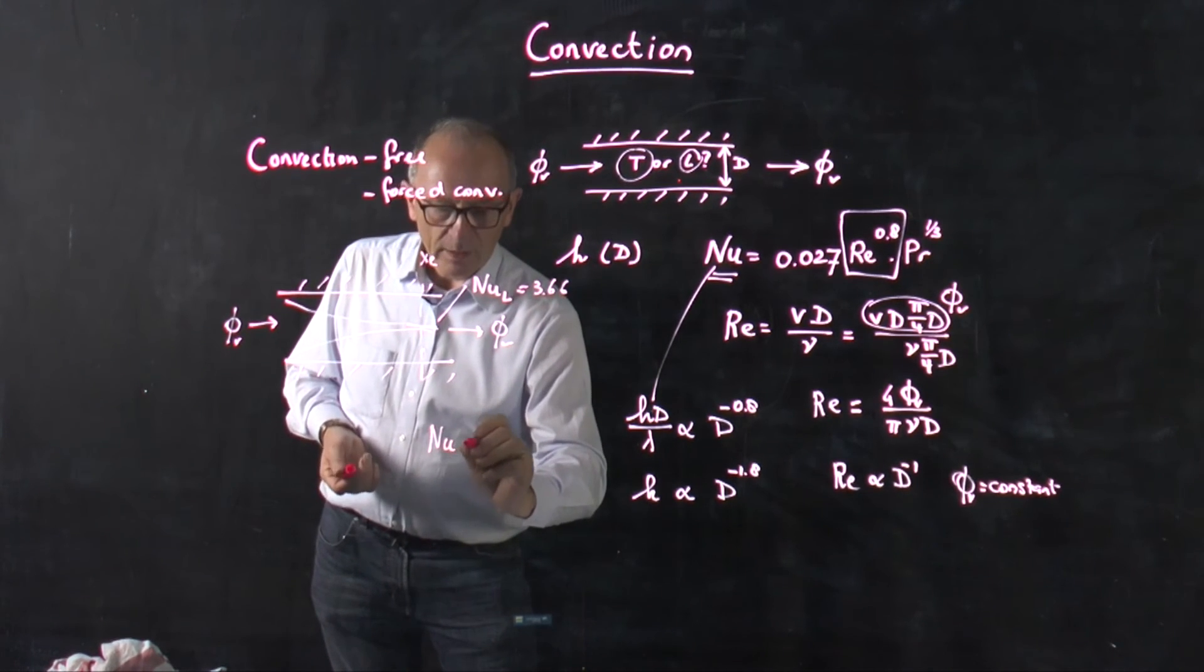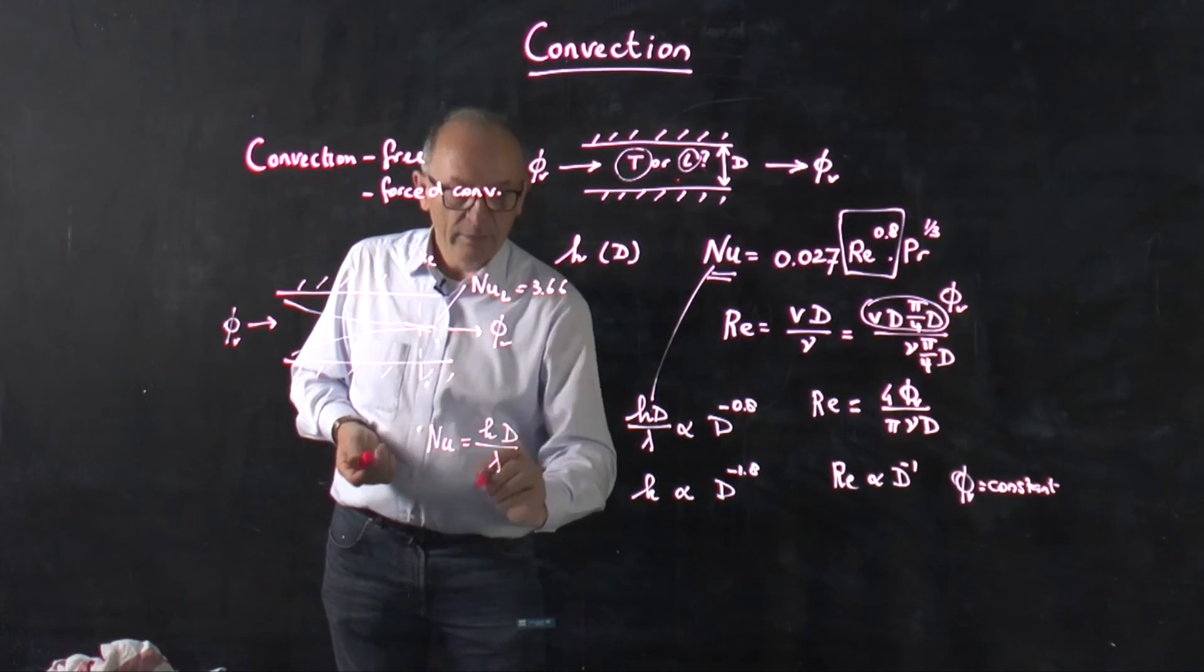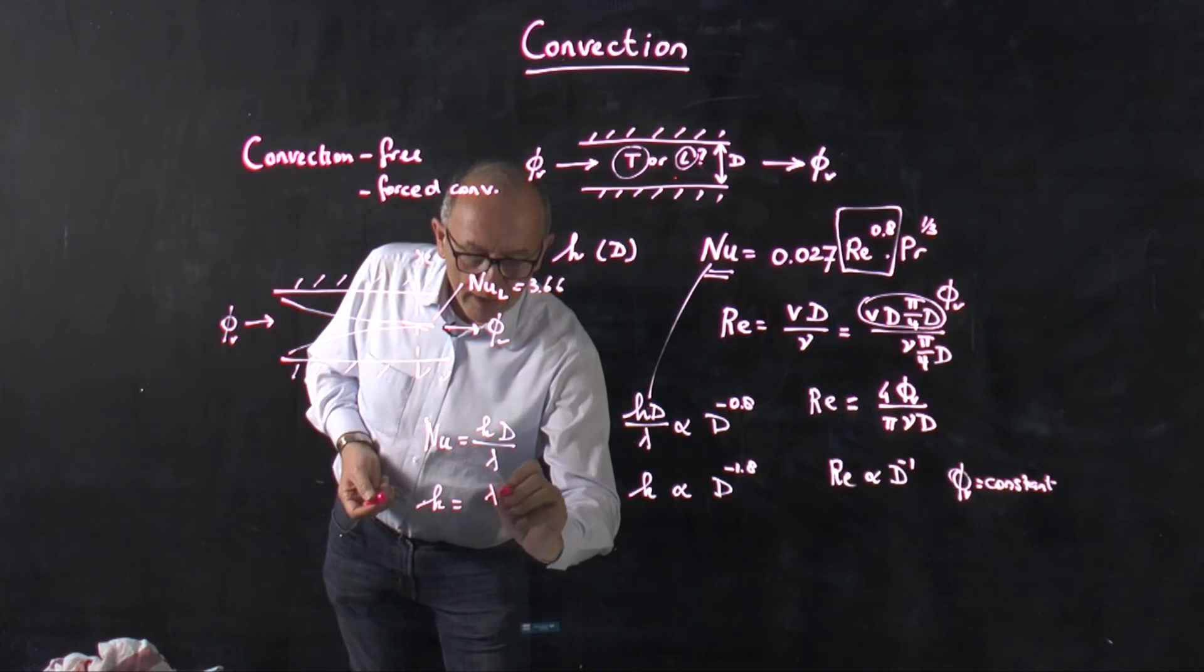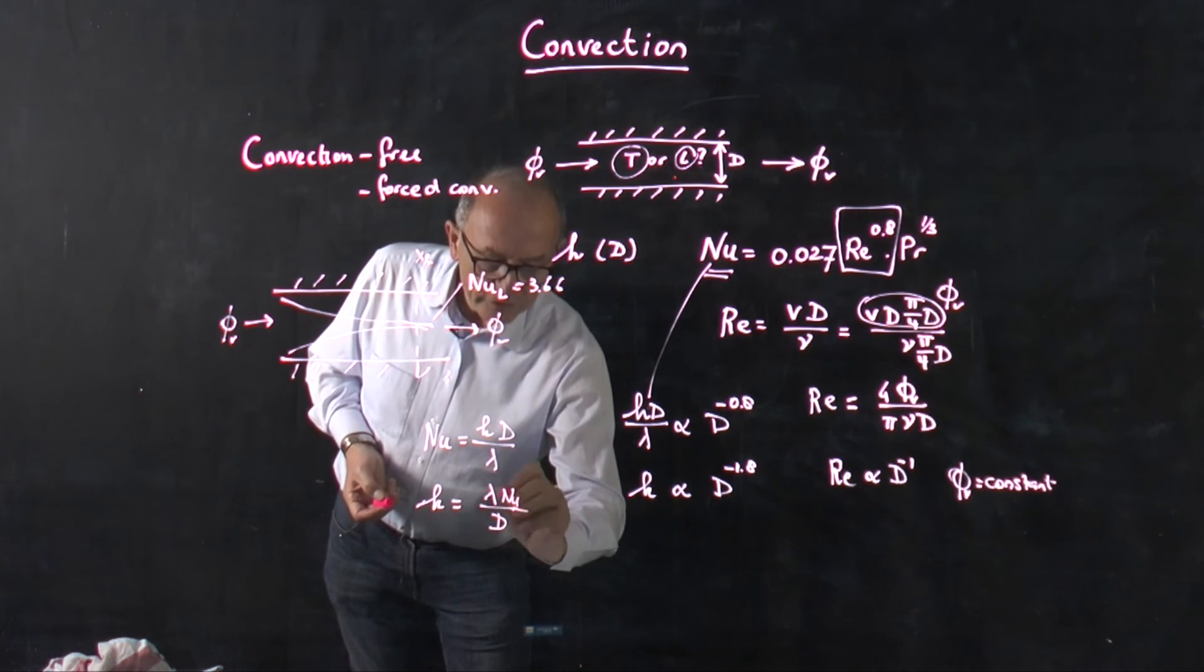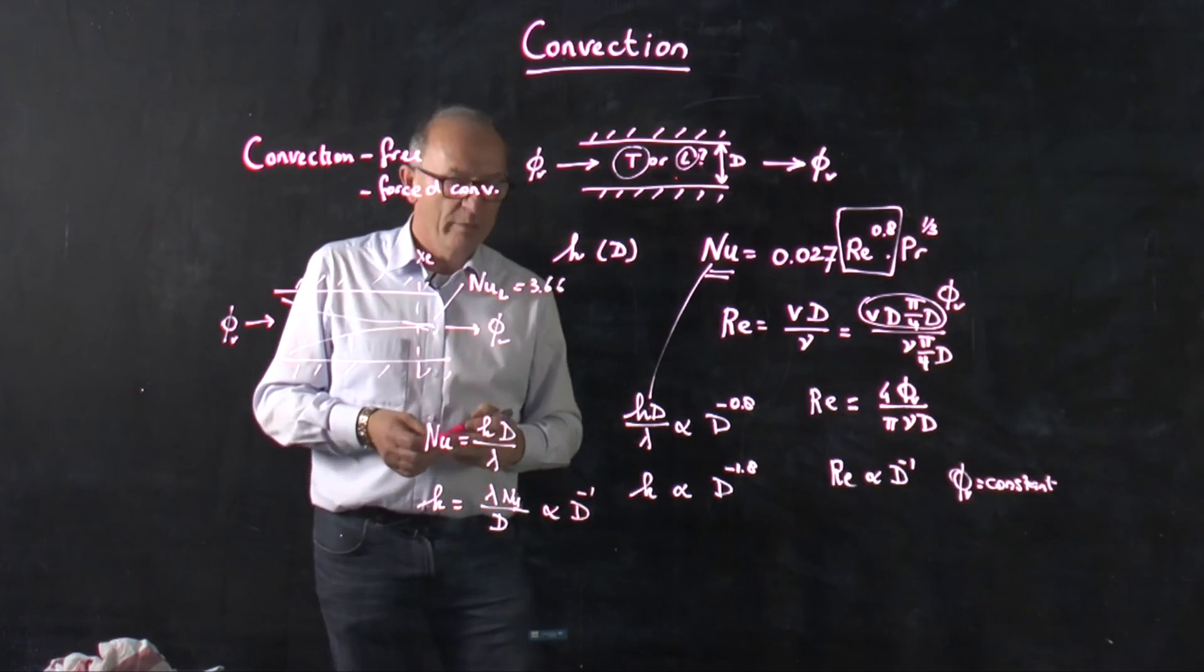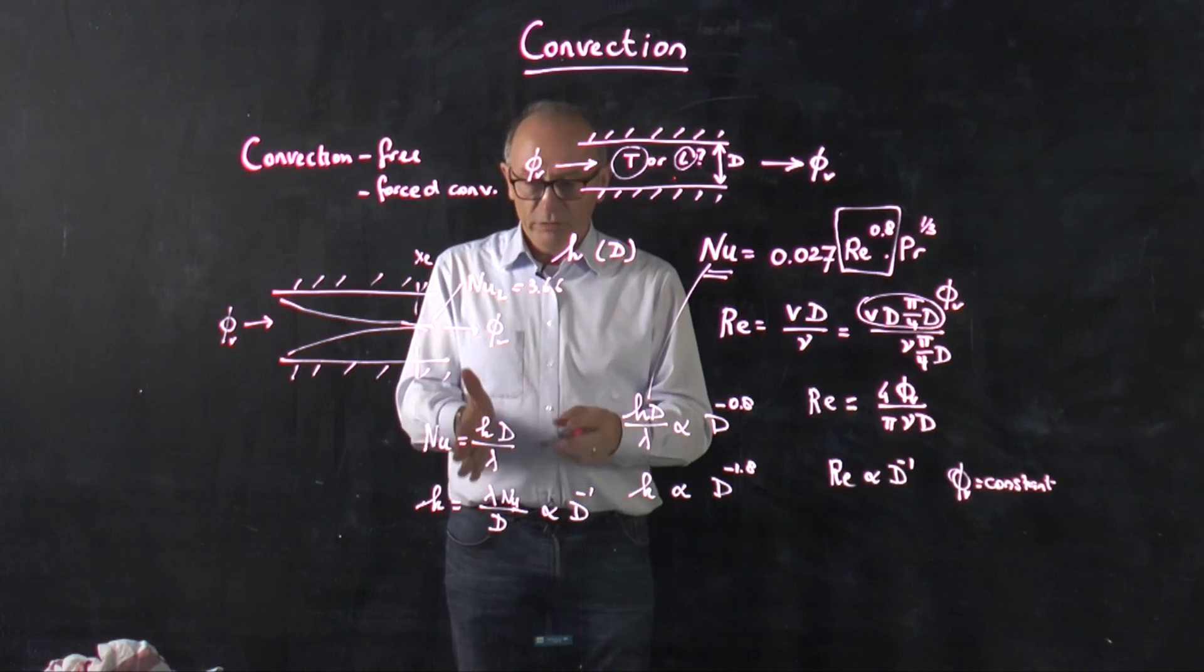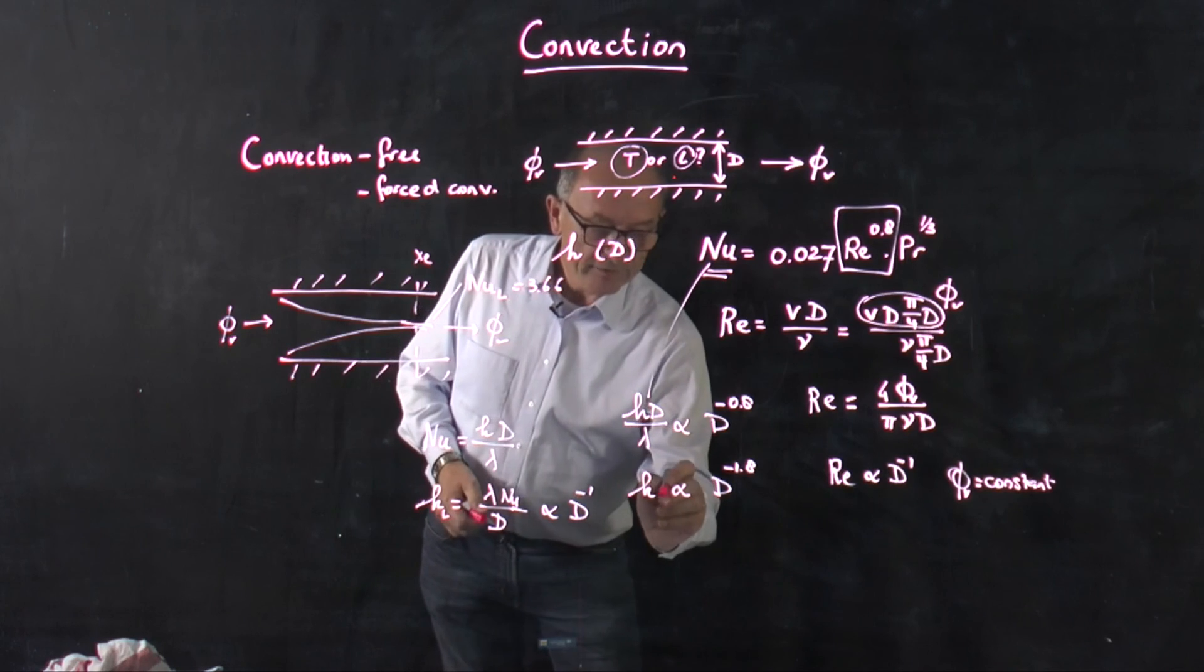This Nusselt number is also equal to h times D divided by lambda. So here you see that the heat transfer coefficient is equal to lambda multiplied by Nusselt divided by diameter. Nusselt is constant, lambda is constant, so this is proportional to D to the minus 1. So what we have learned here, that there is quite a large difference at constant volume flow rate between the laminar situation, HL, and the turbulent situation.